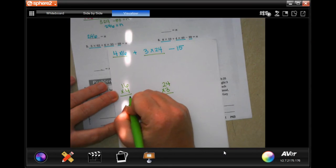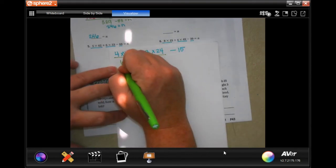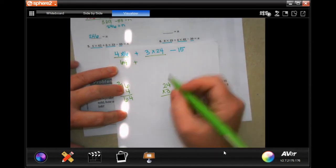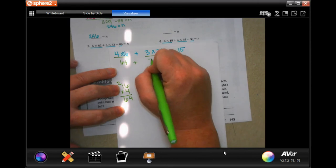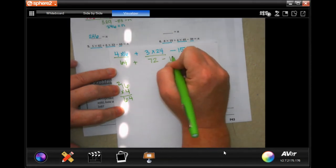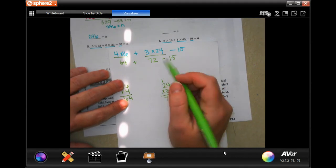So 16 times 4 and 24 times 3. 16 times 4, well, 4 times 6, 24, carry my 2. 4 times 1 is 4, plus 2, 6. So now we have 64, plus 3 times 4 is 12, carry my 1. 3 times 2 is 6, plus 1 plus 1 more is 7, plus 72, minus 15. So now all I have is addition and subtraction. So I can go ahead and keep tracking.